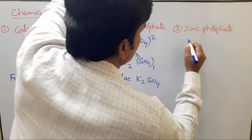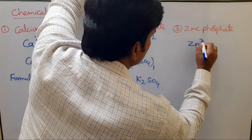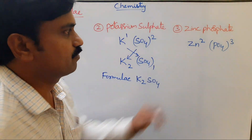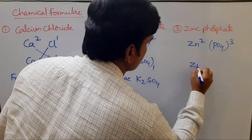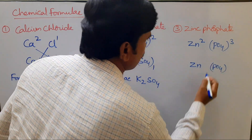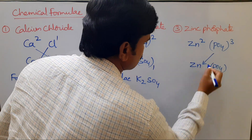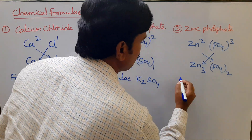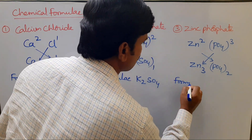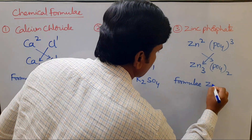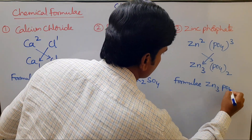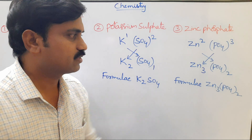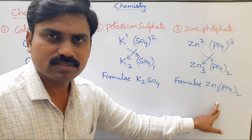Example: zinc phosphate. Zinc has charge 2 and phosphate ion PO₄³⁻ has charge 3. Criss-crossing: phosphate's charge of 3 transfers to zinc, and zinc's charge of 2 transfers to phosphate. The formula for zinc phosphate is Zn₃(PO₄)₂. Zinc phosphate is also known as rat poison.